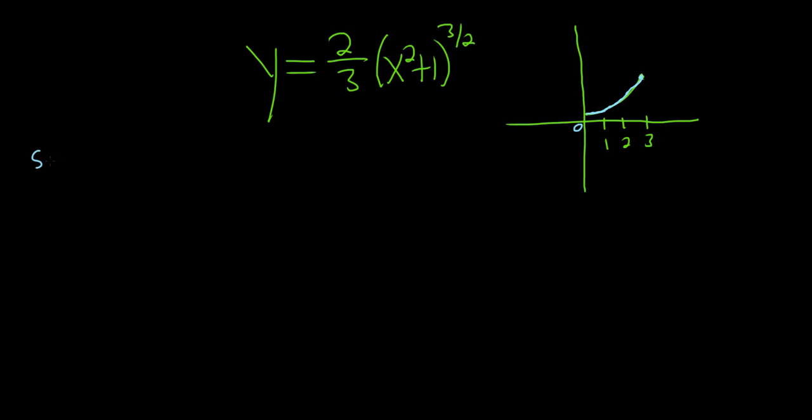The formula for the arc length is the definite integral from a to b of the square root of 1 plus the derivative squared dx. So typically in these problems the first thing we do is we find the derivative.